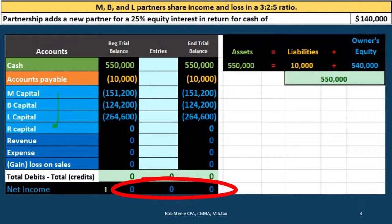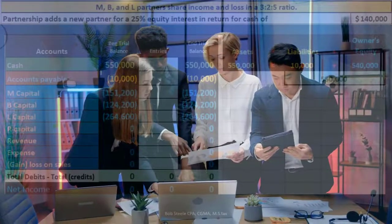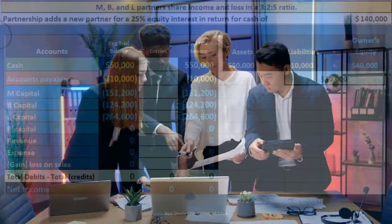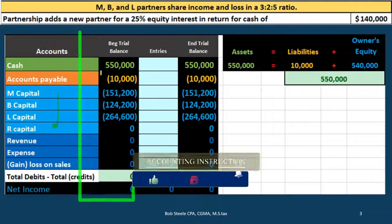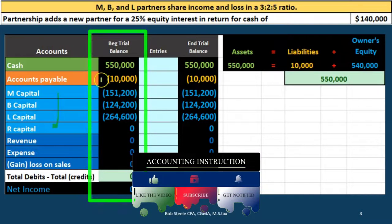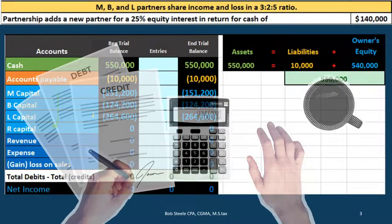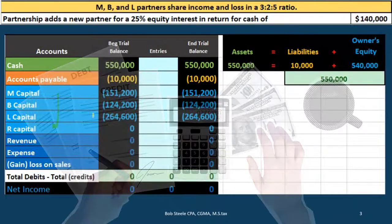There is no net income on this report because we have closed out the income statement to the capital accounts — this is a post-closing trial balance. Our assets equal liabilities plus equity. The equity accounts equal assets minus liabilities: $550,000 minus $10,000 equals $540,000. The capital accounts represent the book value — the net assets — of the company.